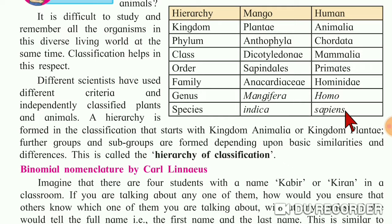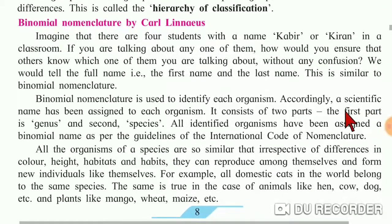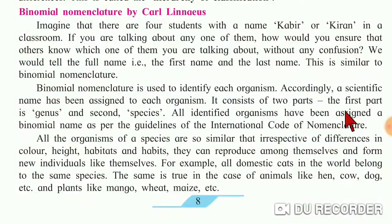According to this, the hierarchy of mango and human is decided. Next we are going to study the binomial nomenclature by Carl Linnaeus — that is, how we can give names to plants and animals. We are going to learn that now.